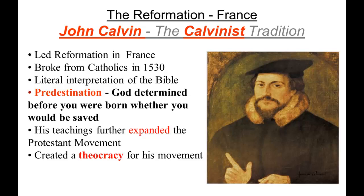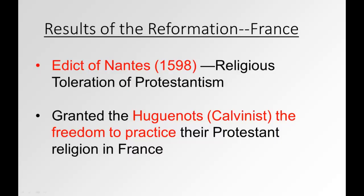Luther didn't believe in predestination; John Calvin did. Calvin also created a theocracy for his movement — where the church and religion lead the nation, church and state together. His movement spread into France, and then came the Edict of Nantes in 1598. Calvin started in 1530, so that's about 68 years — longer than most people lived back then. The Edict of Nantes granted the Huguenots, which is a French word for Calvinist, the freedom to practice their Protestant religion in France. It took 68 years for the king to say it was acceptable.